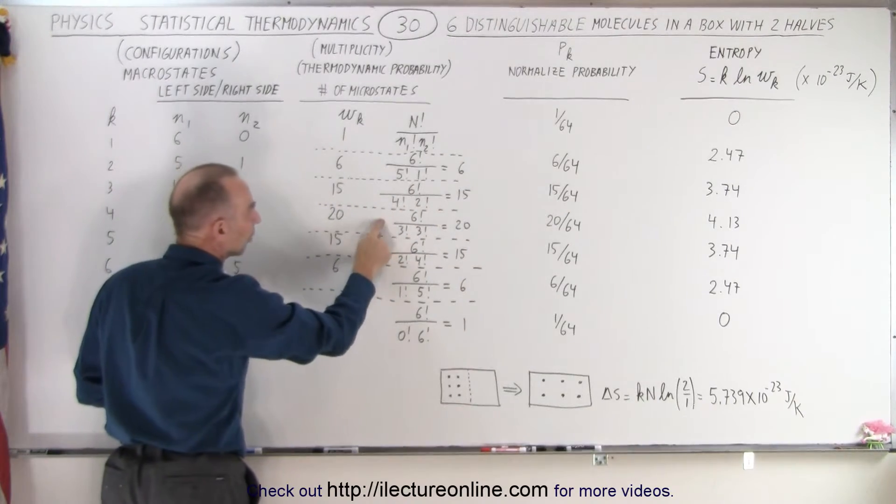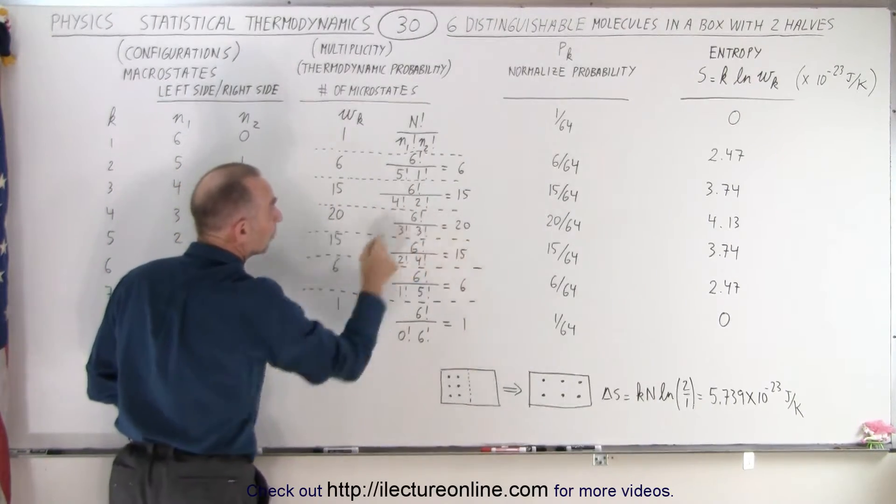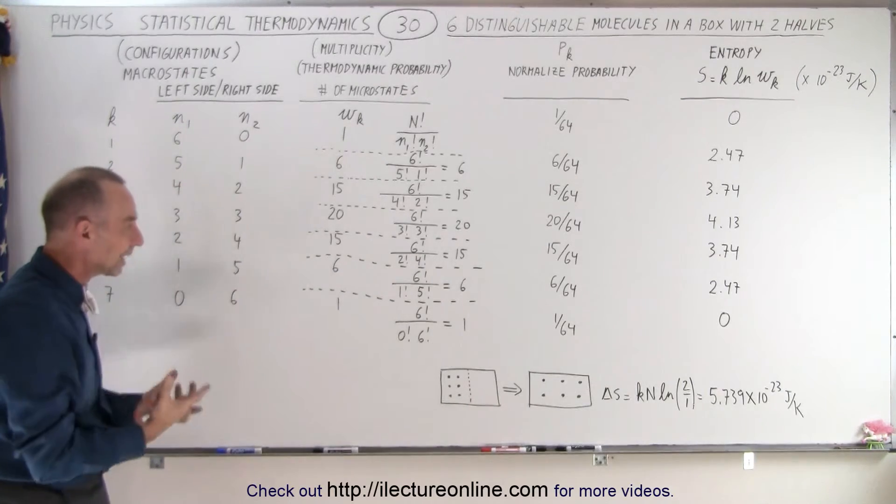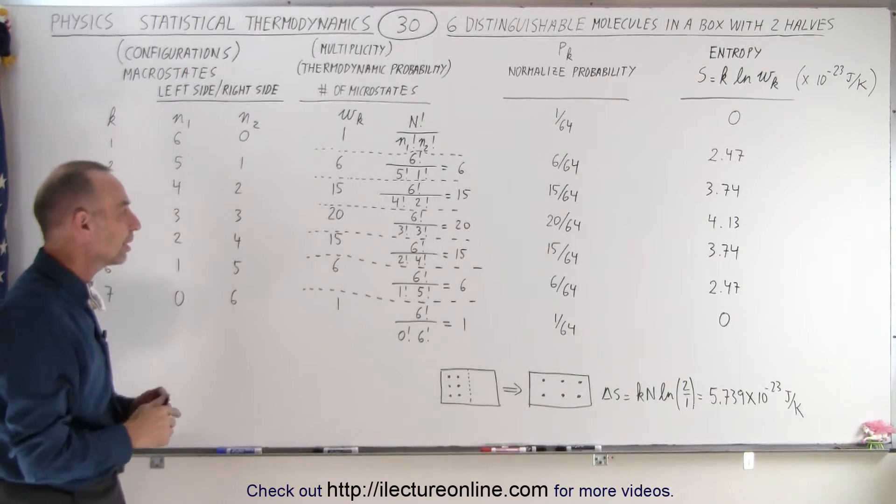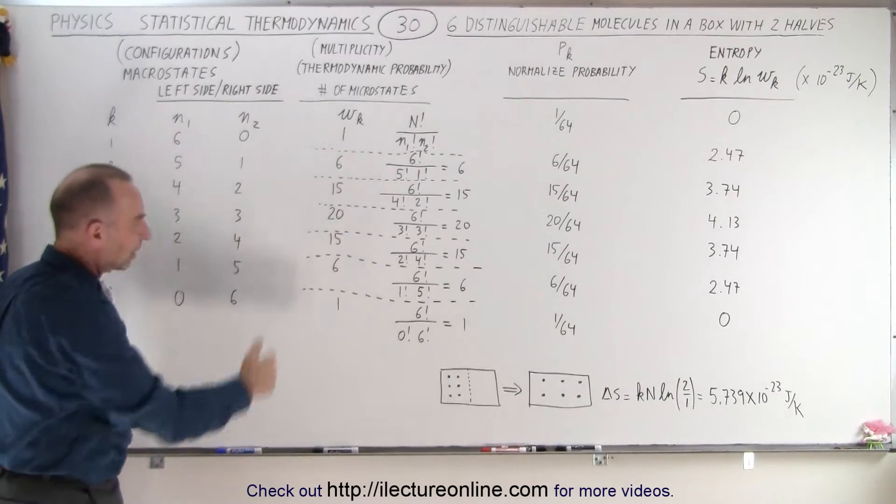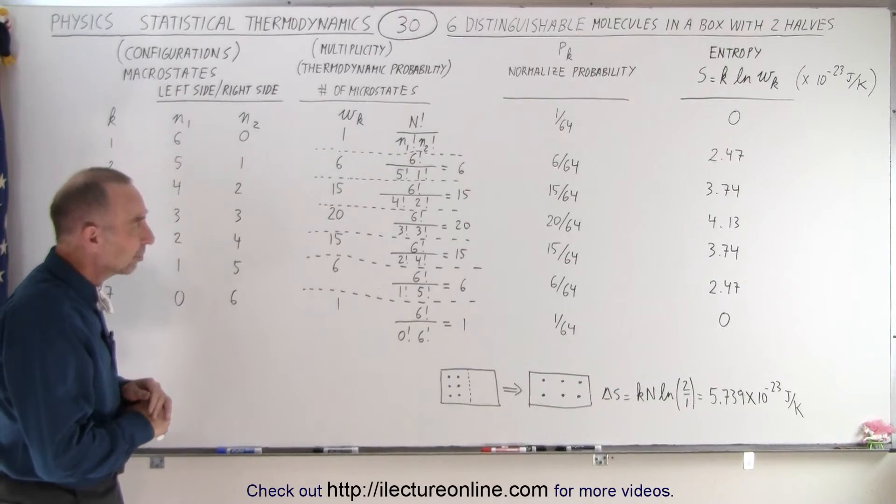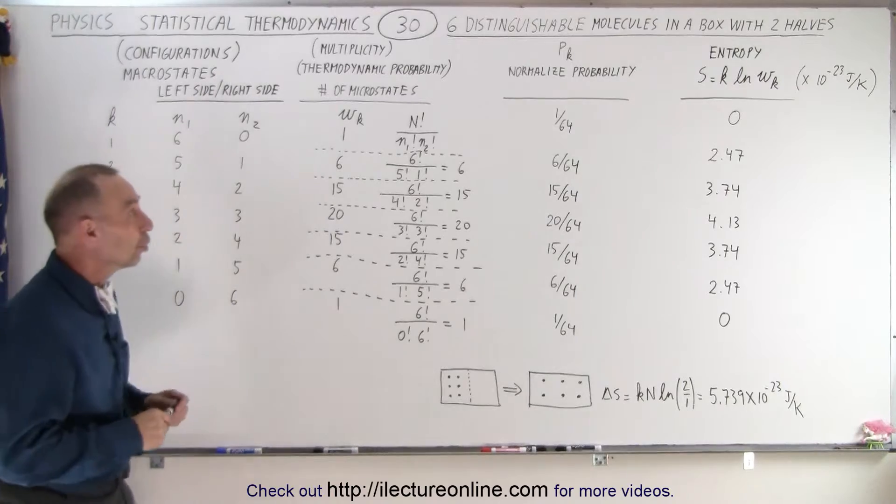Here's the number of microstates, the largest number, is equal to 20. When we have a situation where it's 3 and 3 it's the most likely configuration that you'll encounter. And then we have the calculations for the other number of microstates.